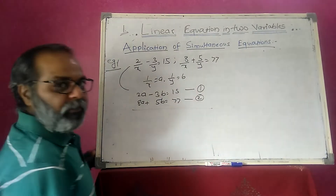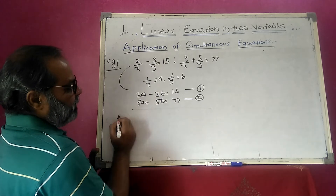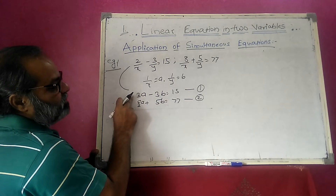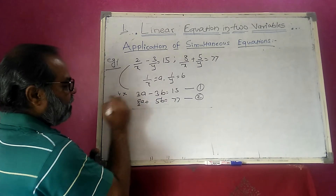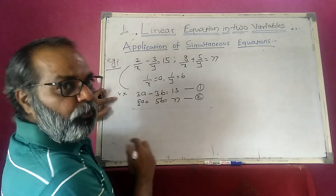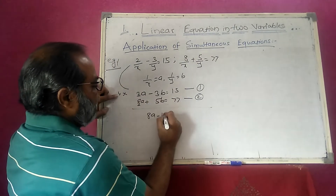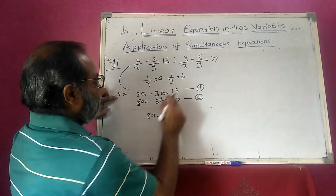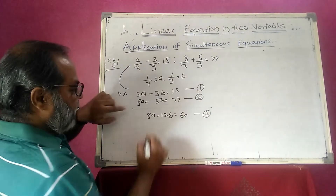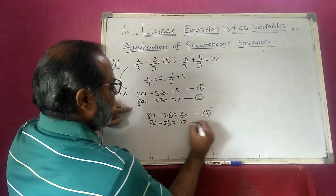I will solve this linear equation by the method of elimination. The coefficient of a in equation 1 is 2 and in equation 2 is 8. To make them equal, I multiply equation 1 by 4 to get 8a. So 4 times 2a is 8a, minus 4 times 3b is 12b, and 15 times 4 is 60. This is the new equation 3. The second equation remains as 8a plus 5b is equal to 77.